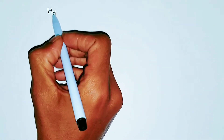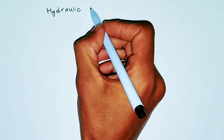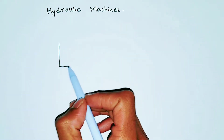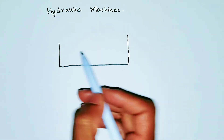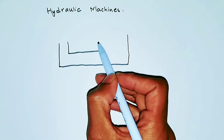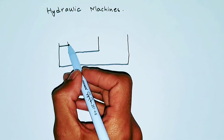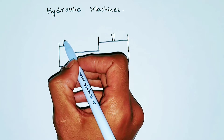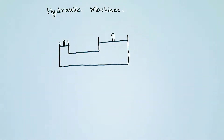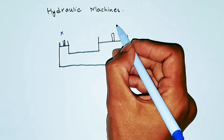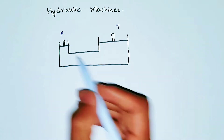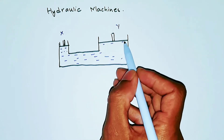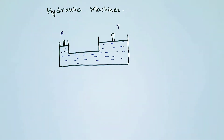The basic structure of hydraulic machines is very simple. All hydraulic machines have the same basic structure. At one side it's small, at another side it's huge. And there are two pistons fitted here. Let's name this piston Mr. X and this piston Mr. Y. And let's fill this with water. That's the basic structure of the hydraulic machine.